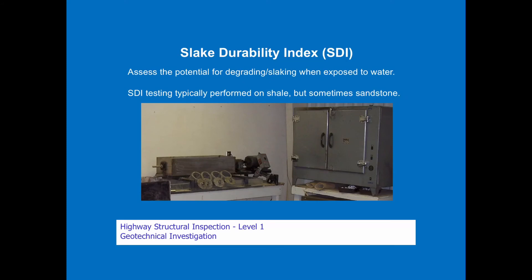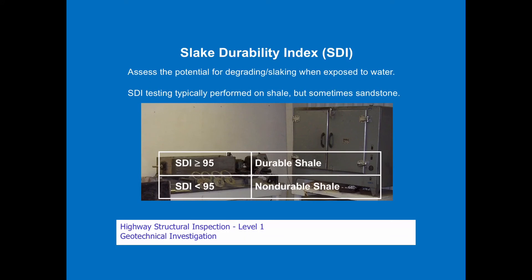The Slake Durability Index is a lab test done on shales to determine their weathering — what is the degrading and slaking when those shales are exposed to water. Some shales will just fade away into mud and almost straight water. This is performed mainly on shale, sometimes on sandstone. We give it an SDI value: 95 and up is considered a durable shale — a good hard rock. Below 95 is non-durable. We need to know how to handle non-durable shales — if we're going to use them in fills or bridge back fills leading up to the bridge, we need to know what to do to make sure they're already slaked out before we start loading more on top.